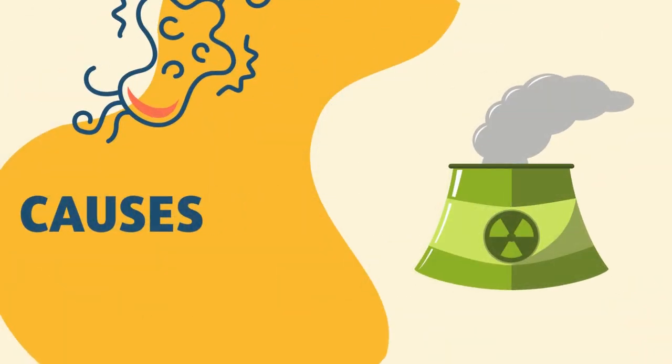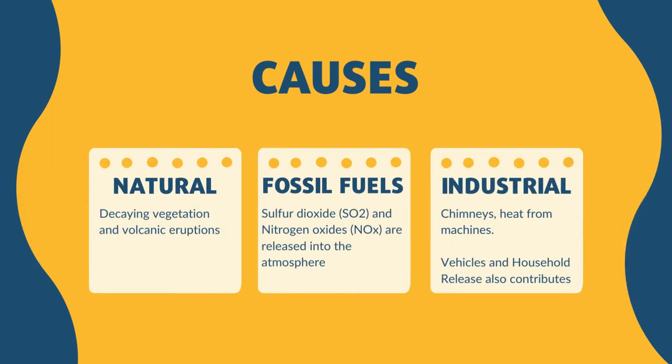The causes of acid rain can be divided into three broad categories: natural, fossil fuels, and industrial. Decaying vegetation and volcanic eruptions release certain chemicals that can cause acid rain. The main human sources are coal-fired power plants, factories and cars. When people burn fossil fuels, sulfur dioxide and nitrogen oxides are released into the atmosphere. These pollutants react with water, oxygen and other substances to form sulfuric and nitric acid in the air.